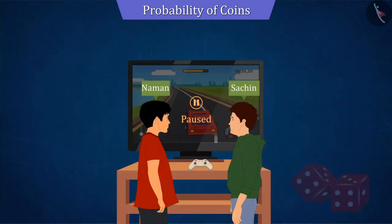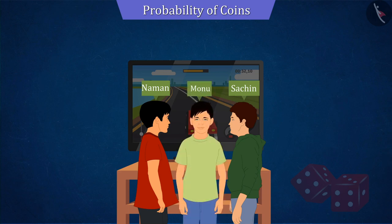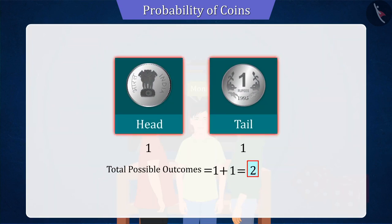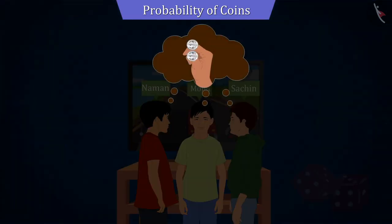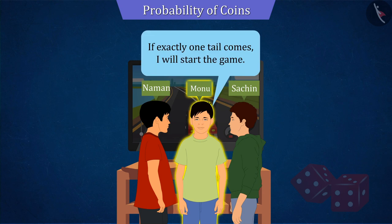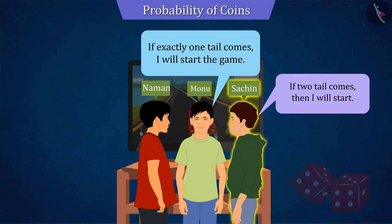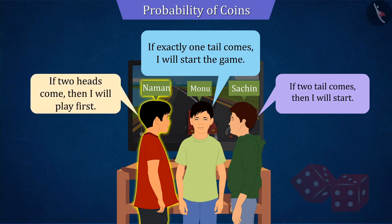Sachin and Naman were discussing that. Meanwhile, their friend Monu comes. He too wanted to play video games, due to which the same problem arises between them — who will start the game first? We have seen that only two results are obtained from a coin, so this time they think of making decisions by tossing two coins. Monu says that if exactly one tail comes, he will start the game. Sachin says that if two tails come, then he will start. While Naman says if two heads come, then he will play first.